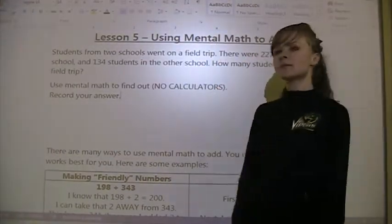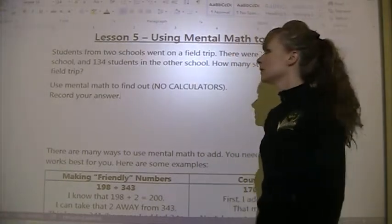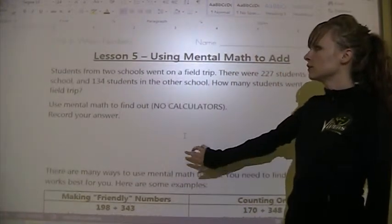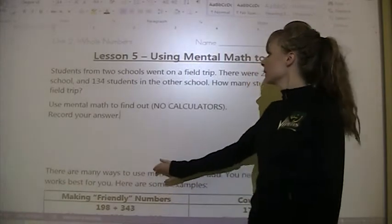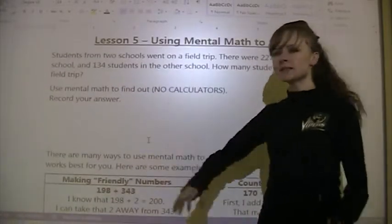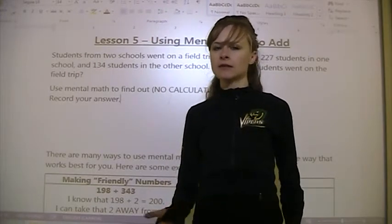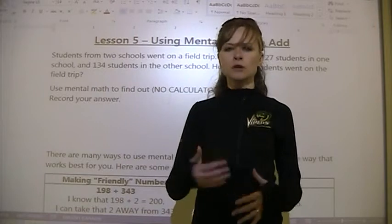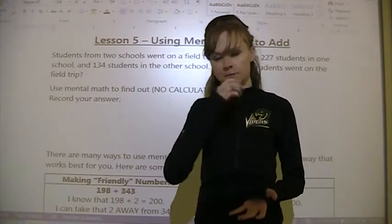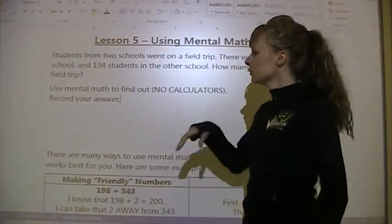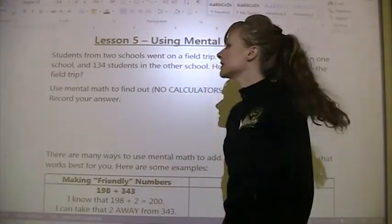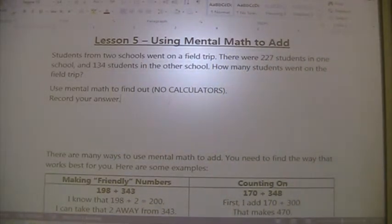This is a lesson on using mental math to add — it is lesson 5 in unit 2, Whole Numbers. We're going to use strategies to add numbers in our head, and we're no longer just estimating; we're also finding the real answer. Here's a problem to start: students from two schools went on a field trip. There were 227 students in one school and 134 students in the other. How many students went on the field trip?